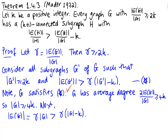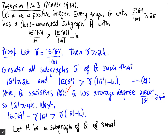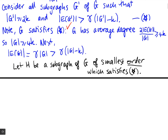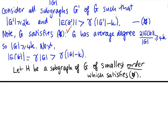We consider the set of all subgraphs that satisfy property star and take the smallest one. Let H be a subgraph of G of smallest order — smallest number of vertices — which satisfies property star. H is going to be the subgraph that does the job in the statement of the theorem.